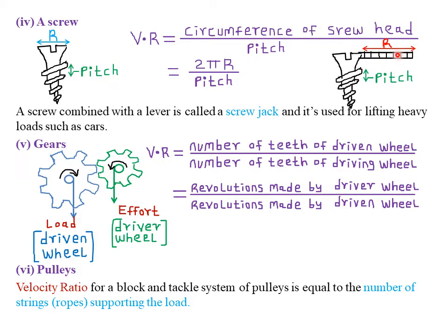This is a typical example of a screw jack, whereby we have taken a screw and added a lever on it. For a screw jack, the velocity ratio is still given by 2πr over the pitch, but for r we use the length of that particular lever. The pitch remains the same — the distance between successive threads of the screw.